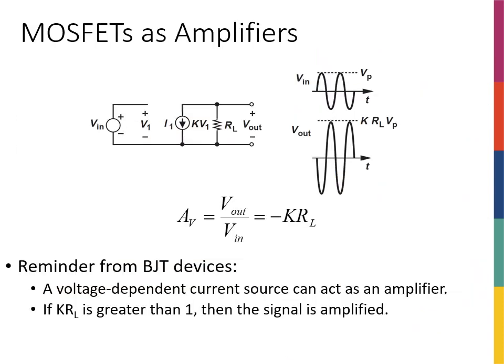The other thing that I wanted to remind you is about this circuit. We talked about this circuit when we were talking about BJT amplifiers and we said that for an amplifier, having a voltage controlled current source is actually quite useful. So in this case, you can see that if I have this V1 and I have a voltage controlled current source, I1 equals KV1.